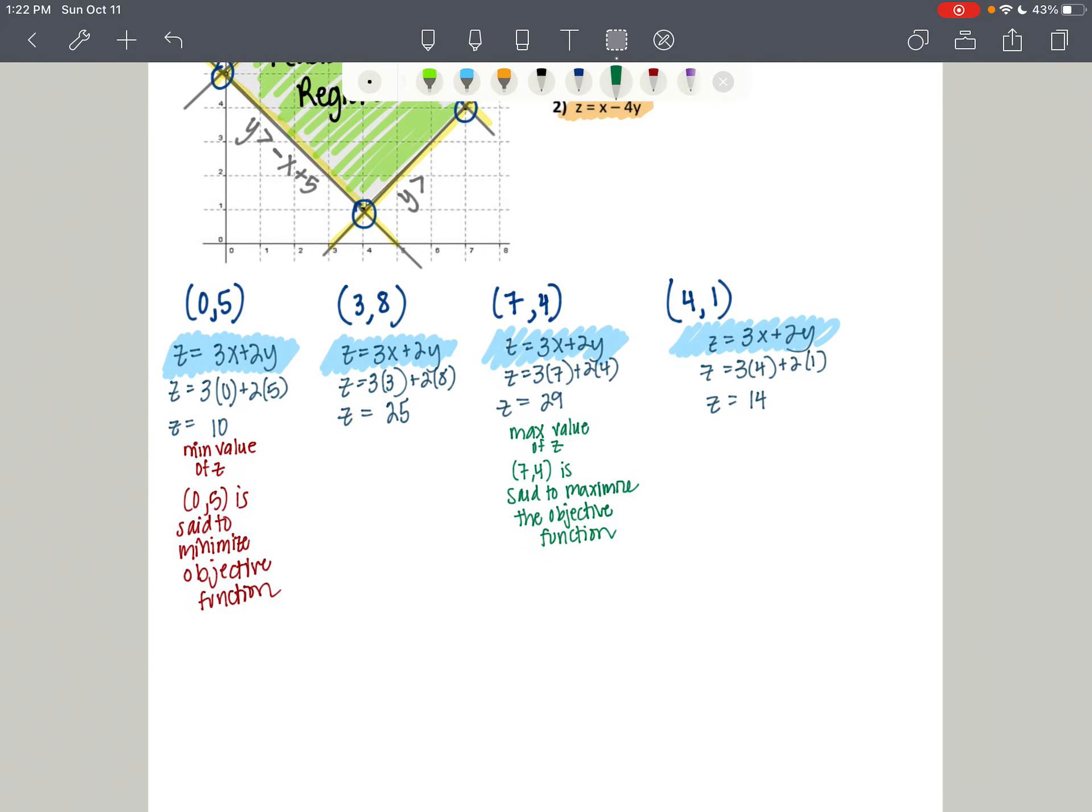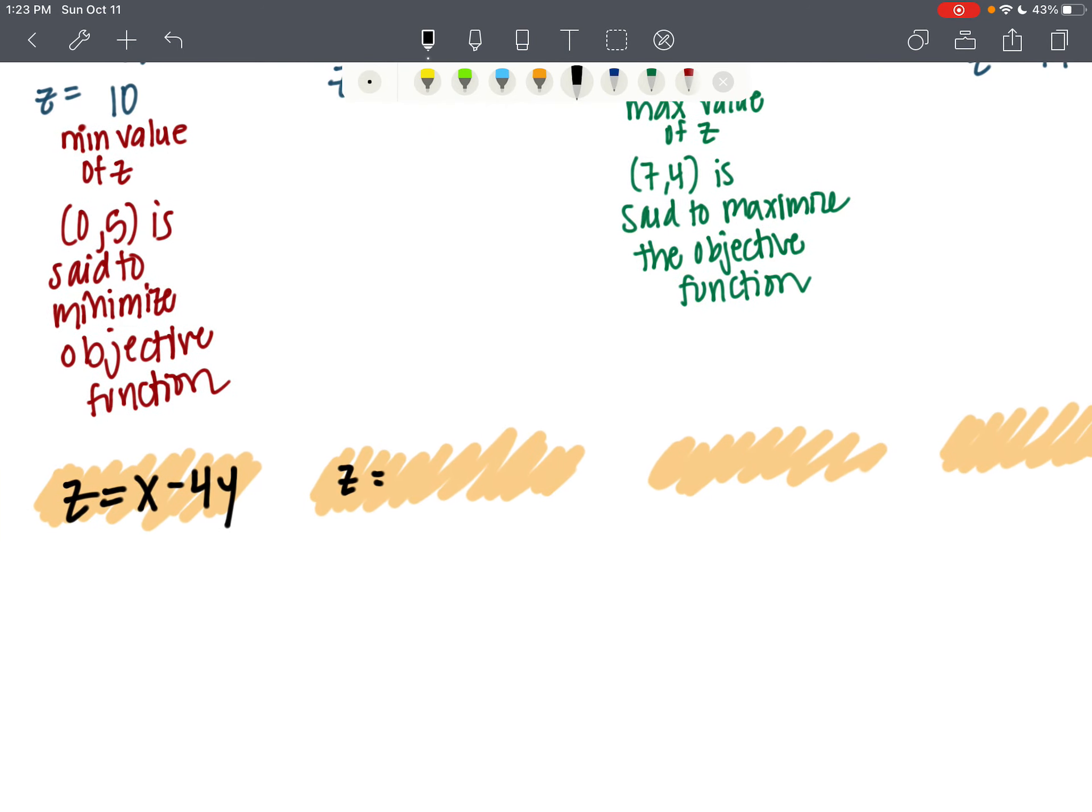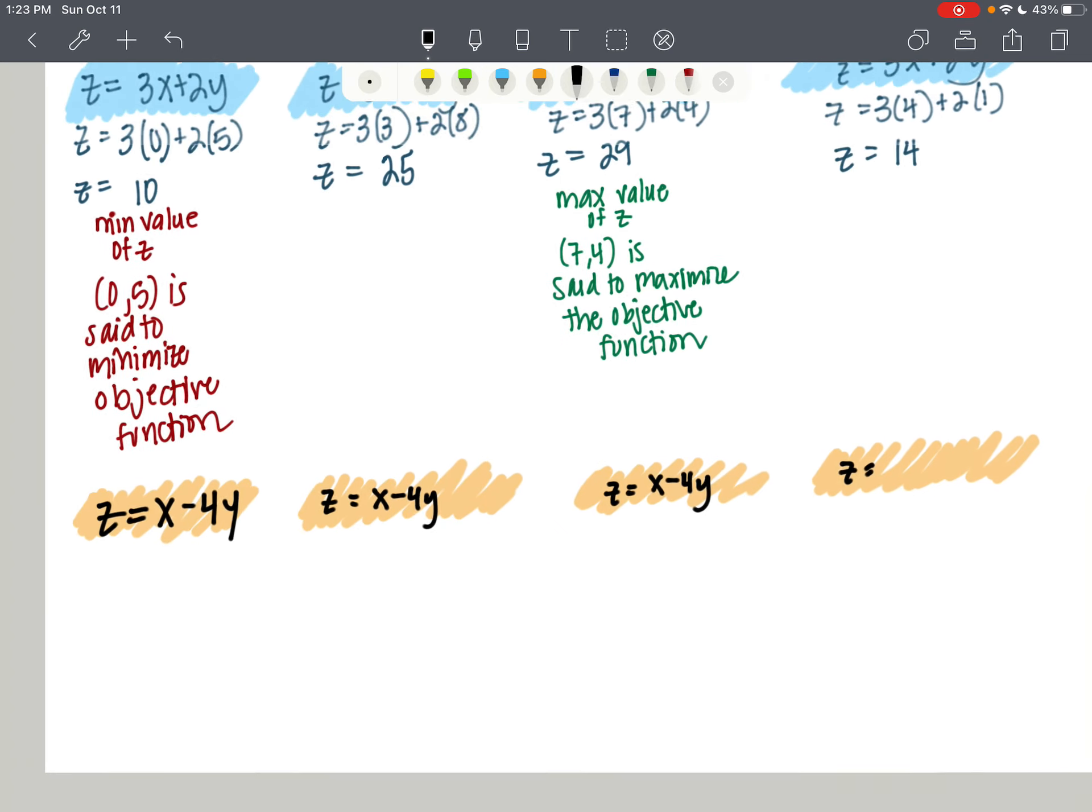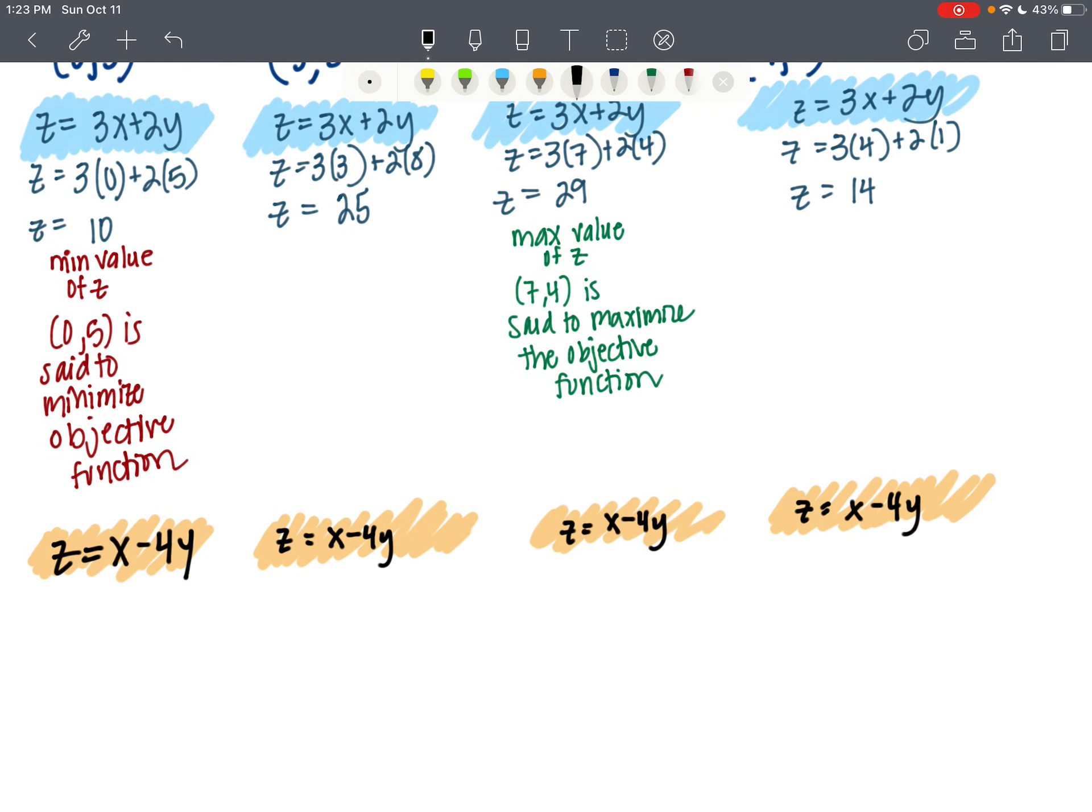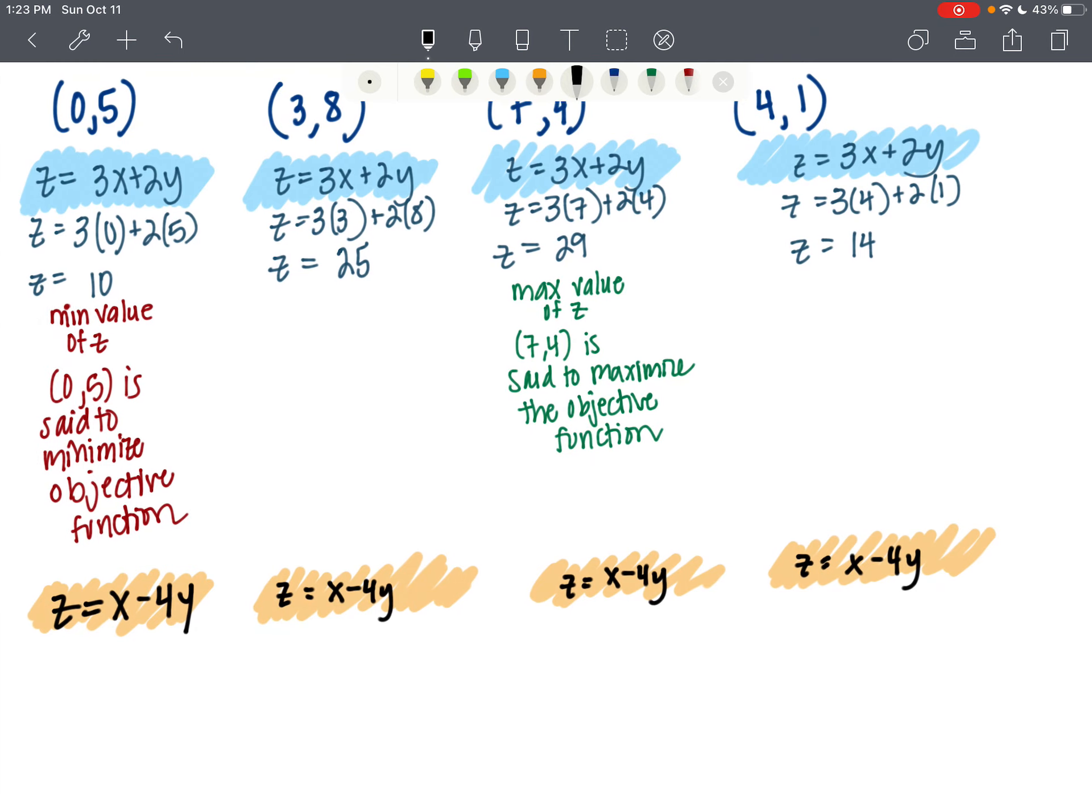So now we're going to practice. So now you get to practice with the next objective function. So number 2 is the one in orange. So we're going to have z equals x minus 4y. And the ordered pairs, once again, I'm going to copy those down.